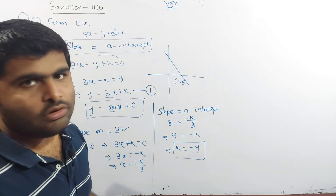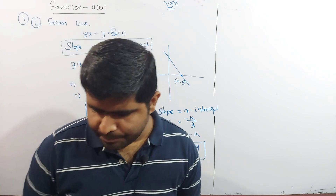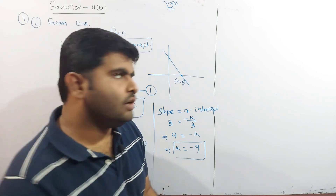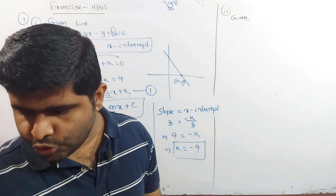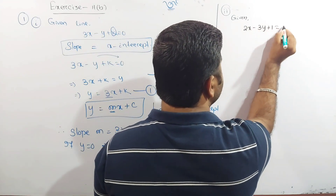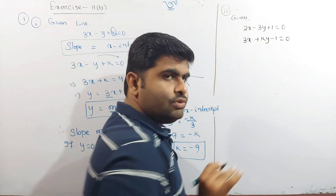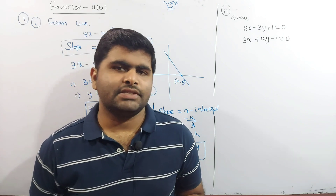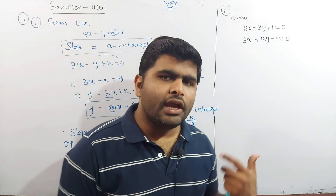Question number 2: the lines 2x minus 3y plus 1 equal to 0 and 3x plus ky minus 1 equal to 0 are perpendicular to each other. What is the value of k?